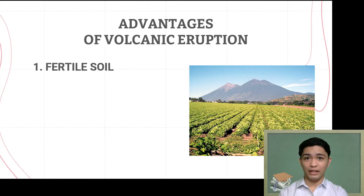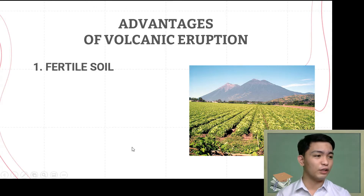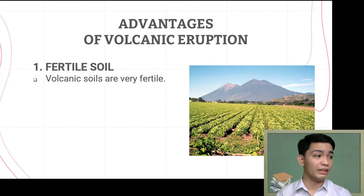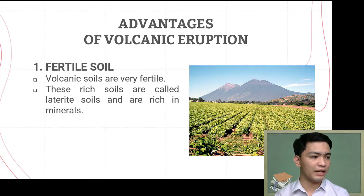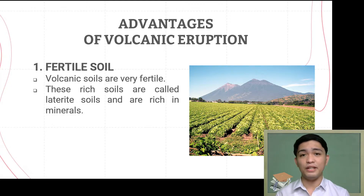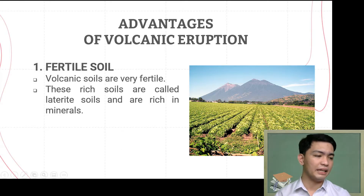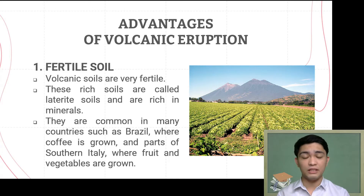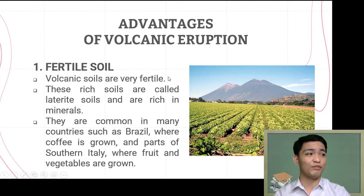The first advantage is fertile soil. Volcanic eruptions result in very fertile soil around the volcano. Volcanic soils are very fertile — plants, fruits, and trees grow easily in this soil. These rich soils are called laterite soils and are rich in minerals from the Earth's interior, which plants need. They are common in countries such as Brazil, where coffee is grown, and parts of southern Italy, where fruits and vegetables are grown. Even in the Philippines, areas near volcanoes have very fertile soil.